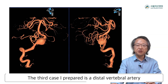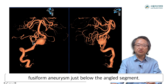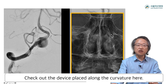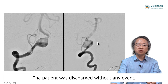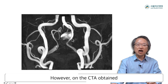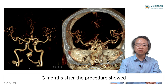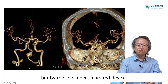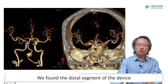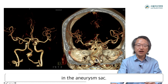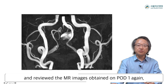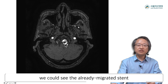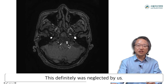The third case is a vertebral artery fusiform aneurysm, just below the angled segment. Flow diversion was done — check out the device placed along the curvature. DSA finding was acceptable and the patient was discharged without any event. However, CTA obtained 3 months after the procedure showed persistent aneurysm filling. We were frightened — not by the poor occlusion, but by the shortened, migrated device. We found the distal segment of the device in the aneurysm sac. Shamefully, when we went back and reviewed the MR images obtained on postoperative day 1, we could see the already-migrated stent on the source images. This was definitely neglected by us.